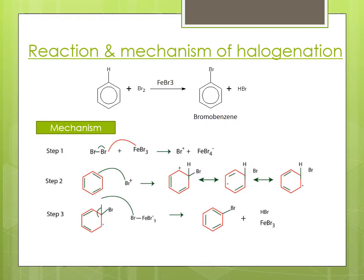Coming to the reaction and mechanism of halogenation: it is the reaction in which the benzene ring reacts with a halogen — here bromine — in the presence of FeBr₃ to form mono-substituted benzene, specifically monobromobenzene. In this reaction, FeBr₃ acts as a catalyst to generate Br⁺ as the electrophile, which attacks on the benzene ring to give a resonance stabilized arenium ion. One proton is then lost to produce monobromobenzene.